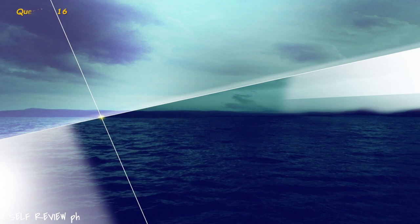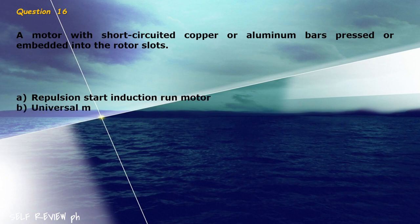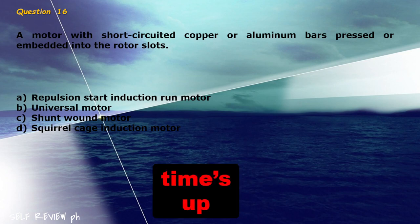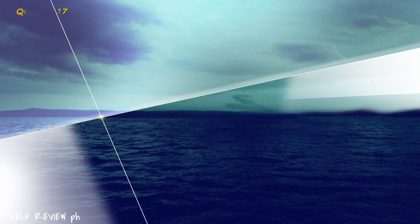Question 16: A motor with short-circuited copper or aluminum bars pressed or embedded into the rotor slots. A) repulsion start induction run motor, B) universal motor, C) shunt wound motor, D) squirrel cage induction motor. The correct answer is letter D, squirrel cage induction motor.